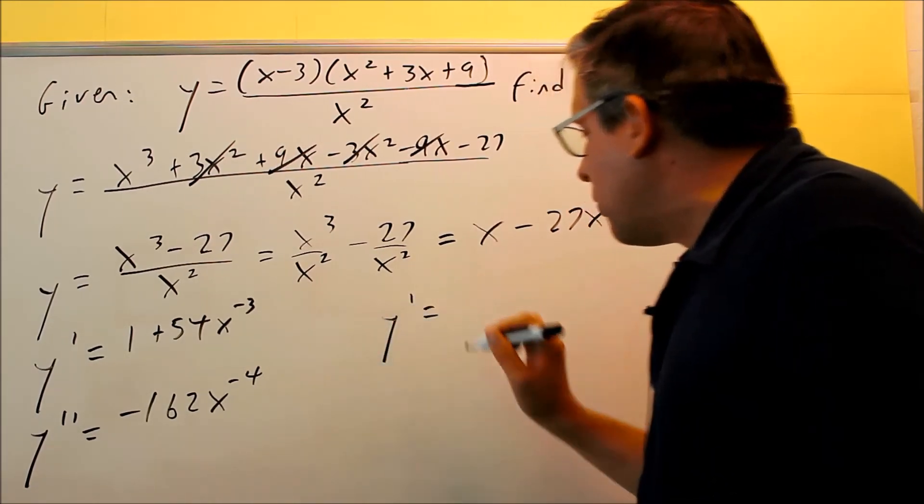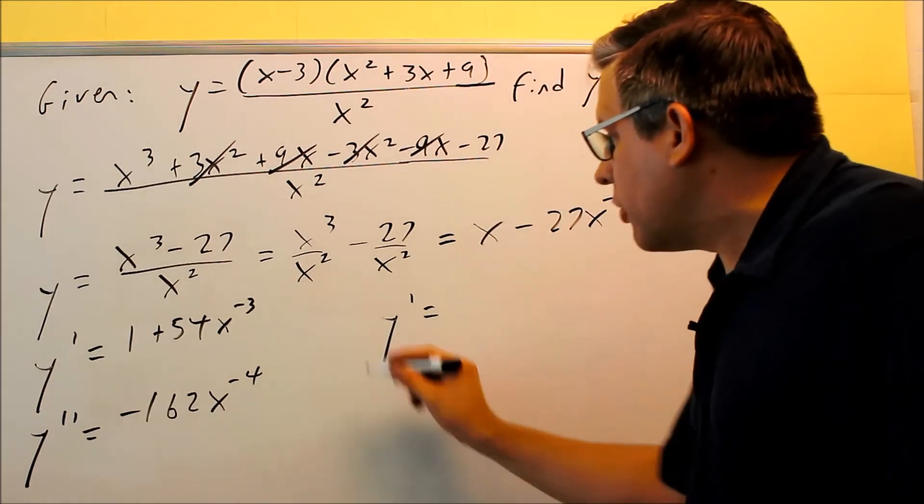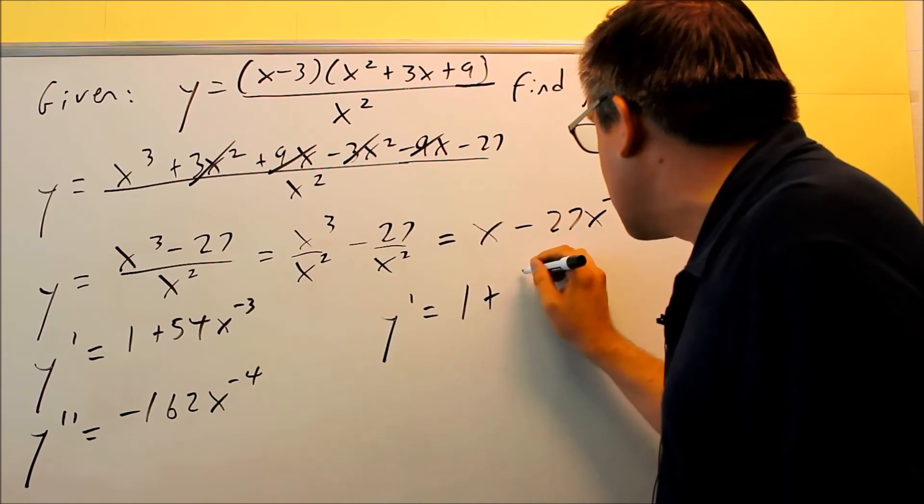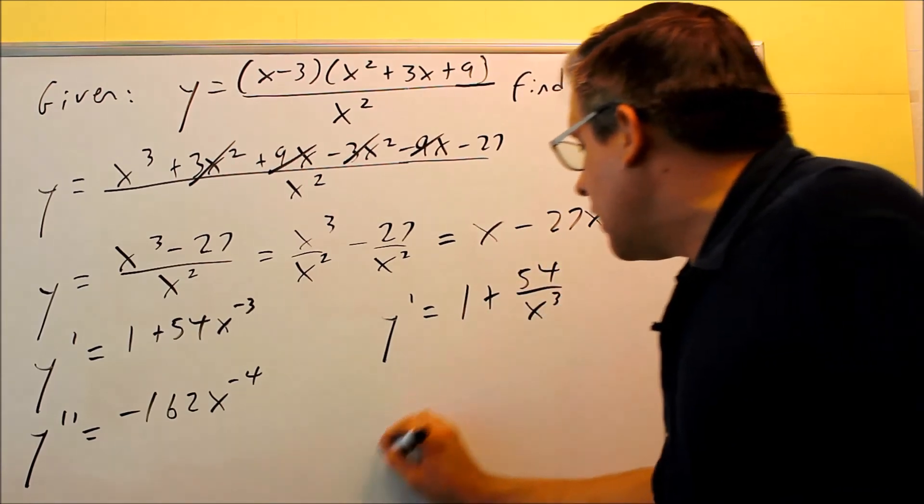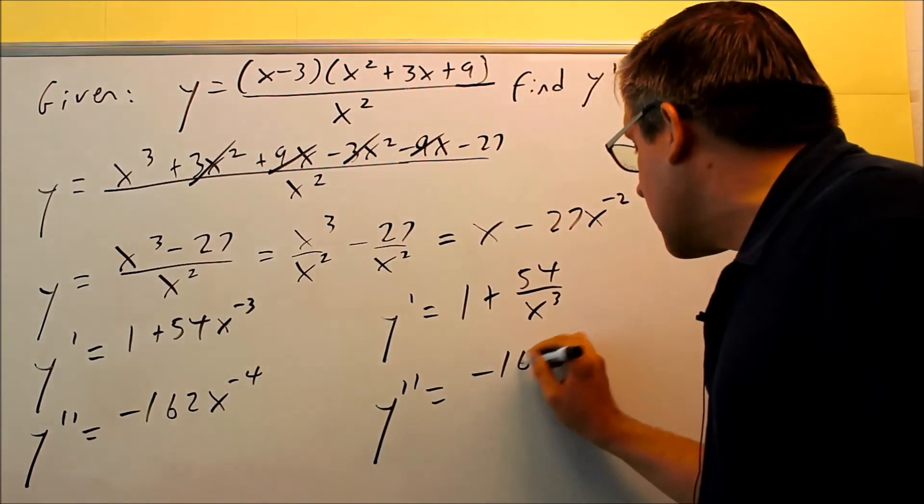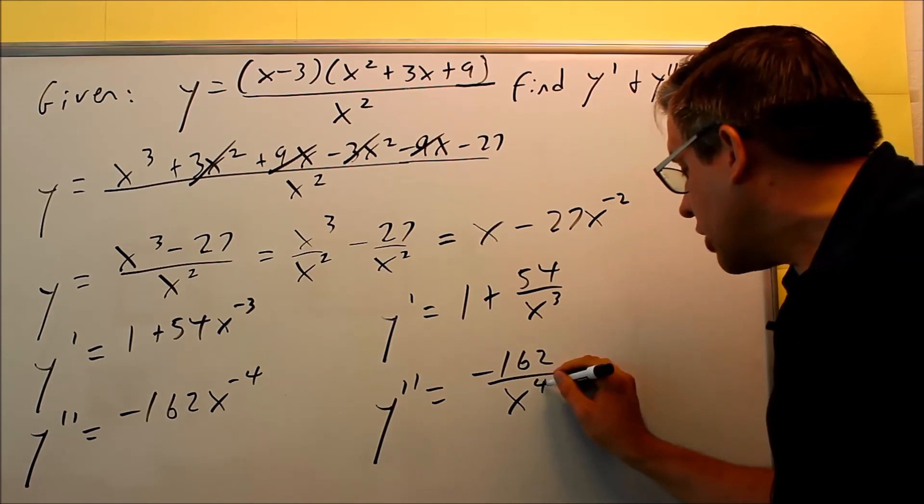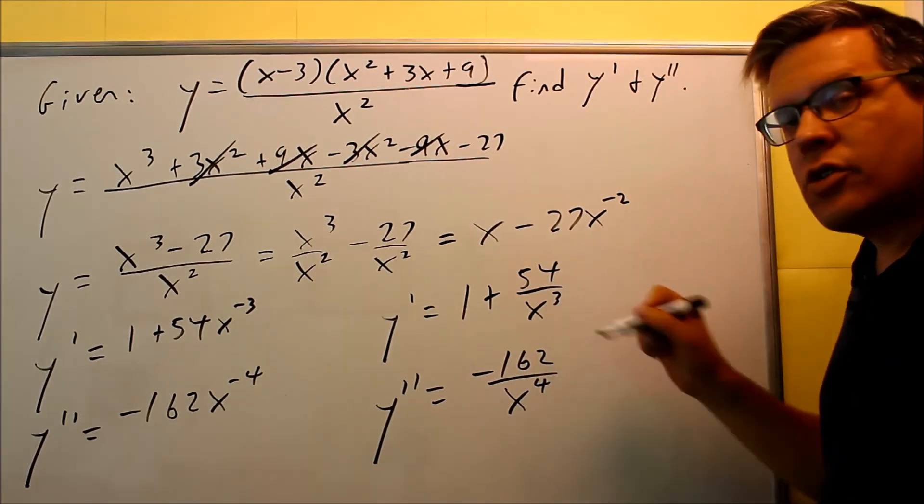So here's our final answers that we'll put as far as entering it into the online homework system. It's better to write these without negative exponents. We can write this as 1 plus 54 over x cubed. And then the second derivative is going to be negative 162, all that over x to the fourth power. Again, these become positive when we write them down below. So here's your first and here's your second derivatives.